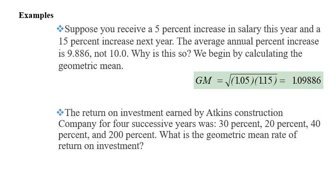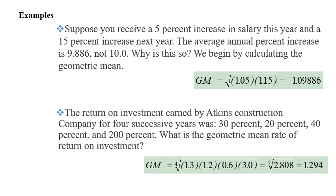The second example: the return on investment earned by Atkins Construction Company for four successive years was 30%, 20%, minus 40%, and 200%. What is the geometric mean rate of return on investment? We can see that we multiply the first 1.3, 1.2, third is 0.6 because this is negative growth, so 1 minus 0.4 is 0.6, times 3 because this is 1 plus 2. After getting the fourth root, it is 1.29, so that it is 29%.